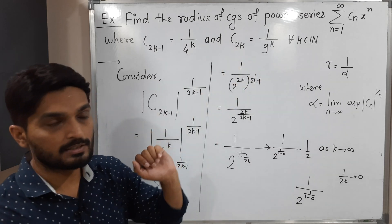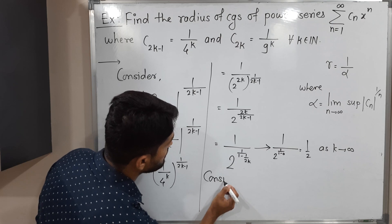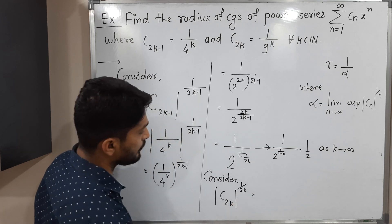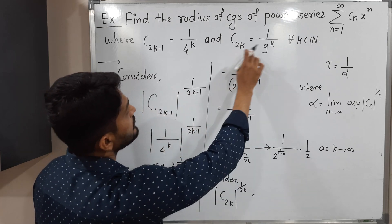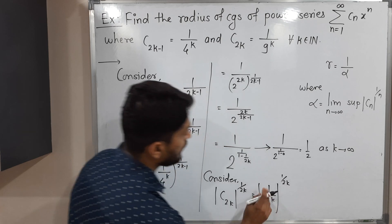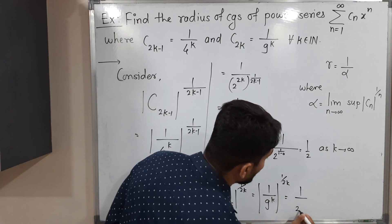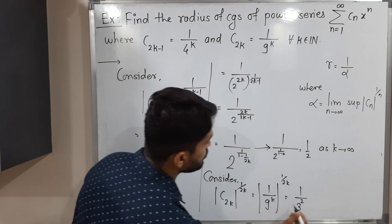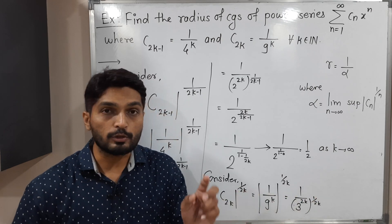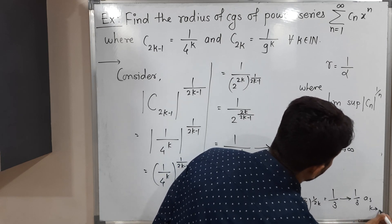Now consider the second case where the suffix is even, i.e., n = 2k. We have |c_{2k}|^{1/(2k)} = (1/9^k)^{1/(2k)}. Since 9 = 3², we get 1 / (3²)^{k · (1/(2k))} = 1 / 3^{2k/(2k)}. The 2k cancels, giving 1/3. Since this is constant, as k → ∞ it remains 1/3.